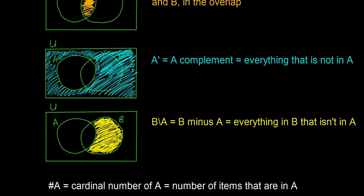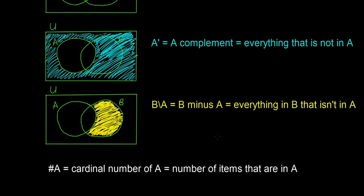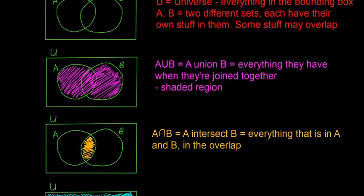B minus A, so B backslash A, that's the same thing as B minus A and that's everything that's in B but that isn't in A. So this is the shaded yellow region, the stuff that's in B but not the stuff that's in B and A. And then the last one we're going to look at is the cardinal number. So it's just #A or #B and it's the number of items that are in that set.